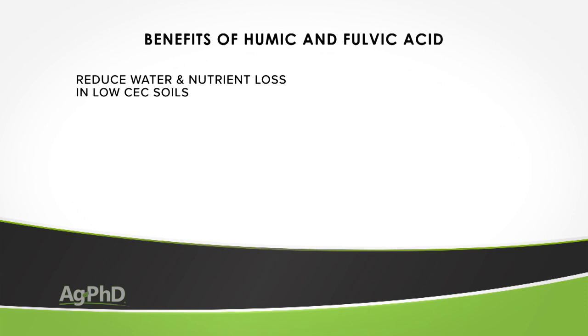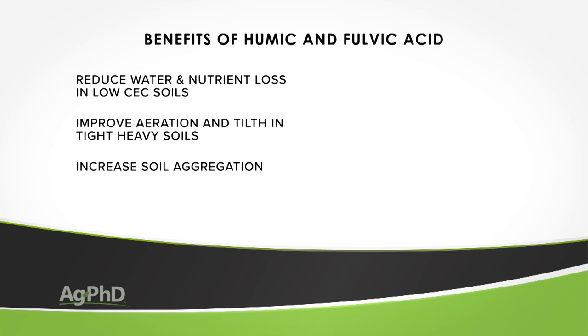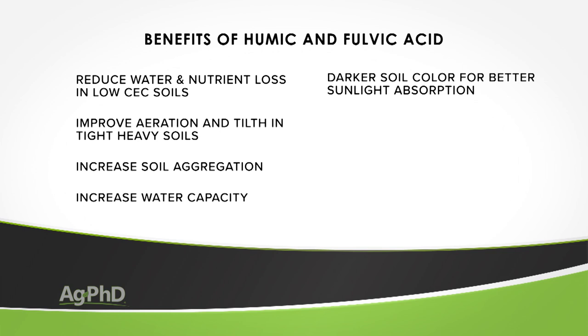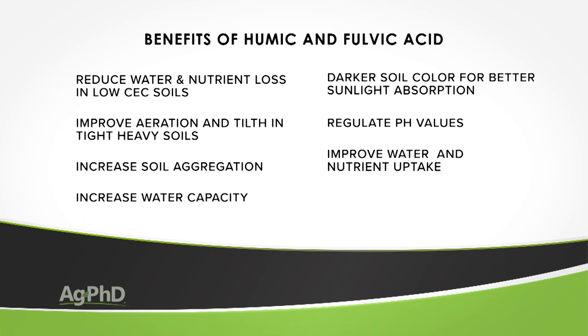Some potential benefits include: reduce water and nutrient loss in low CEC soils; improve aeration and tilth in tight, heavy soils; increase soil aggregation; increase soil water-holding capacity; make the soil a darker color which increases sunlight absorption; regulate pH value of soils; improve nutrient and water uptake; and increase the buffering properties of soil. There are a whole bunch of potential benefits that could come out of humic and fulvic acid.